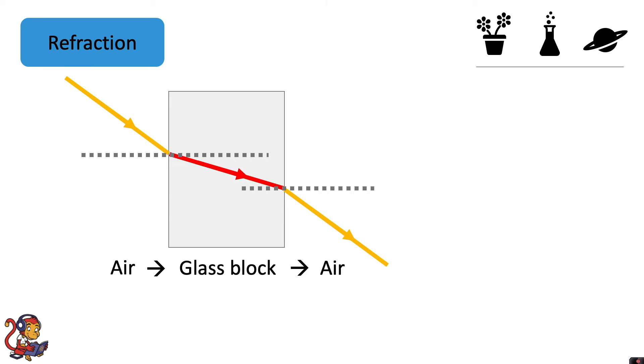So here we've got a diagram that shows how light moves from air into a glass block and out again into air. So as you can see, as the light comes in, it doesn't travel in a straight line through the glass block like so. Instead, it changes direction, so it goes along this path here, as it travels through the glass block.